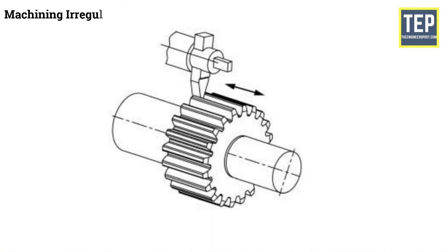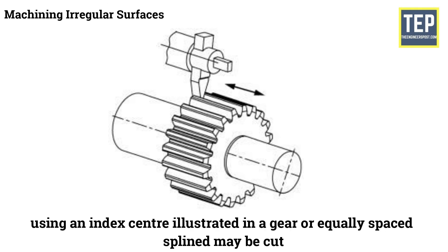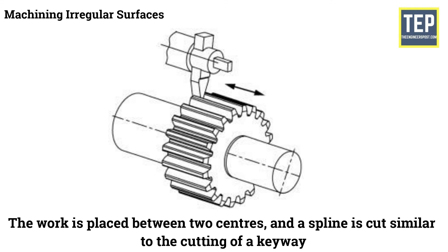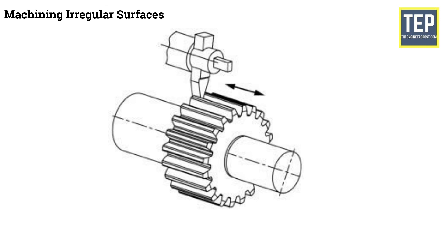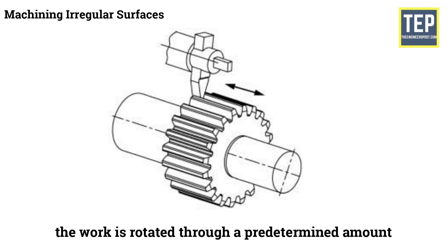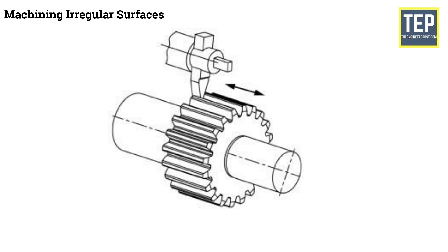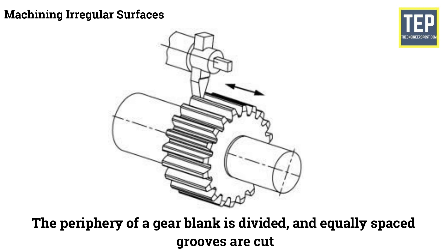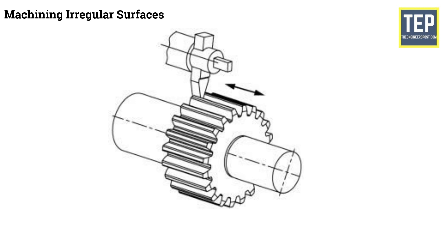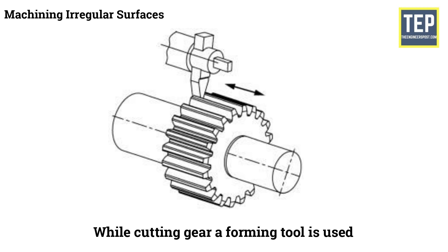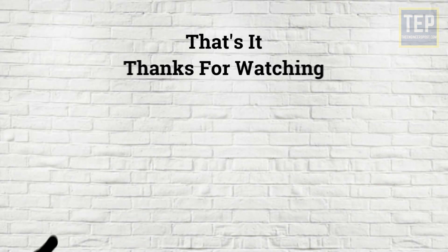Machining splines or cutting gears: these operations are done using an index center. A gear or equally spaced spline may be cut by placing the work between two centers; a spline is cut similarly to a keyway. After the first spline is cut, the work is rotated through a predetermined amount using the index plate and index pin. The periphery of a gear blank is divided into equally spaced grooves cut using an index plate with proper hole circles. While cutting a gear, a forming tool is used.